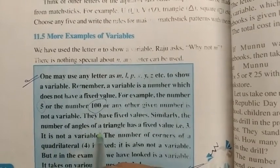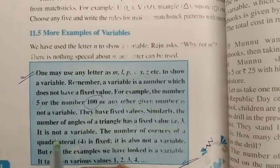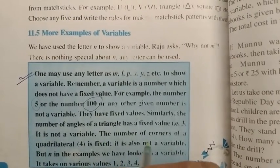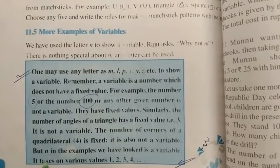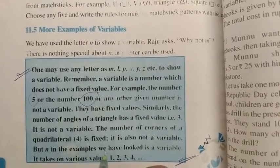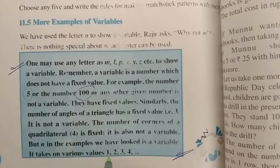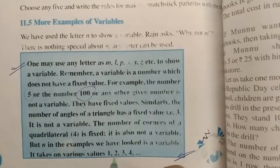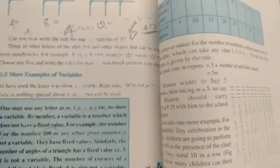Similarly, the number of angles of a triangle has a fixed value that is 3. It is not a variable. The number of corners of a quadrilateral 4 is fixed. It is also not a variable but n in the examples we have looked in is a variable. It takes on various values. Variable is not fixed. So you have to take any value: 1, 2, 3, 4, 5, up to so on.